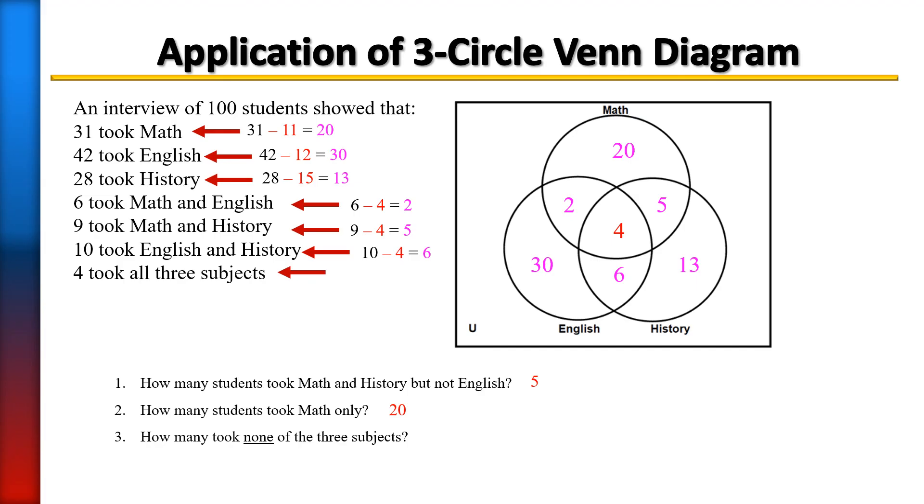How many students took none of the three? Well, all of these students in the circles took at least one of them, one or more. That was 80 students, but we have 100 students in all, so that would mean there would be 20 students who did not take any of the three subjects. They would be outside in the universal set. They're still in there, but they're just outside.